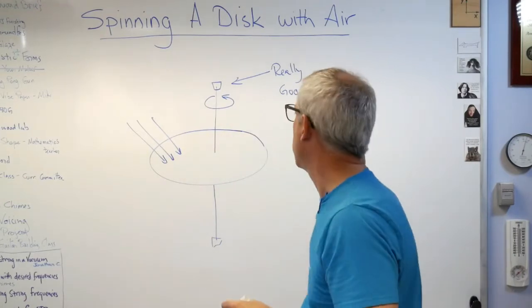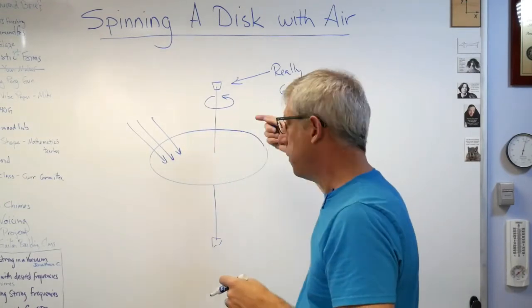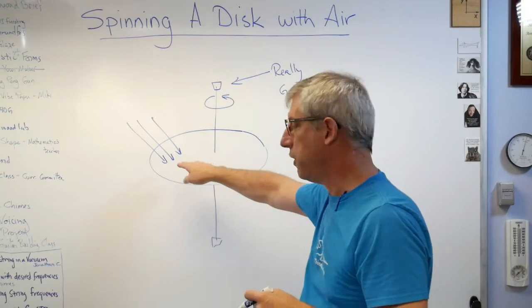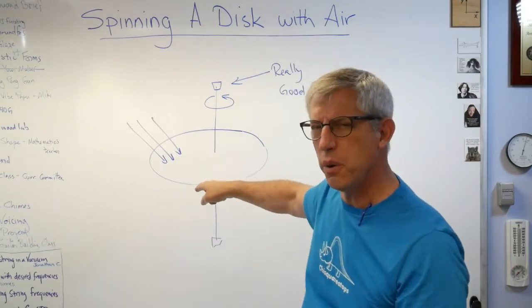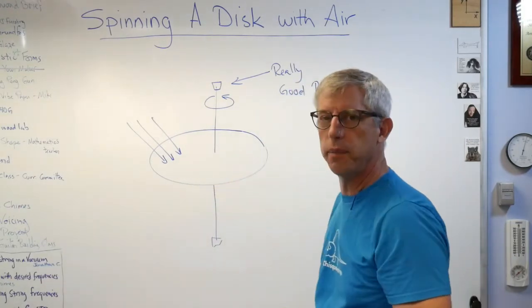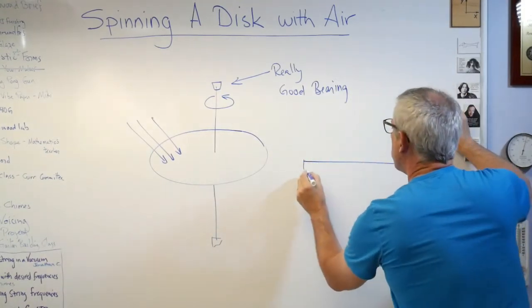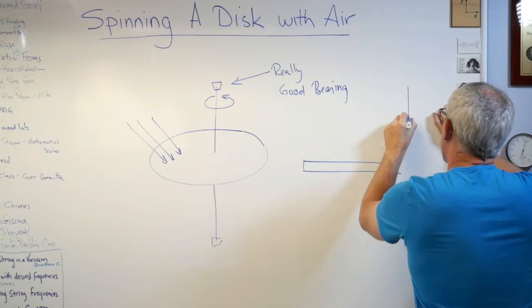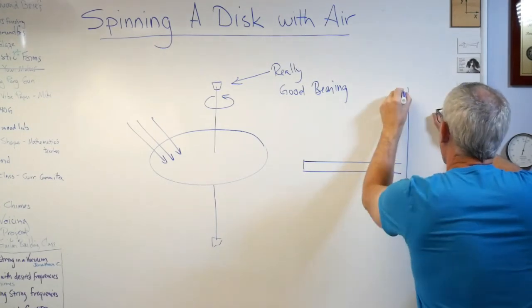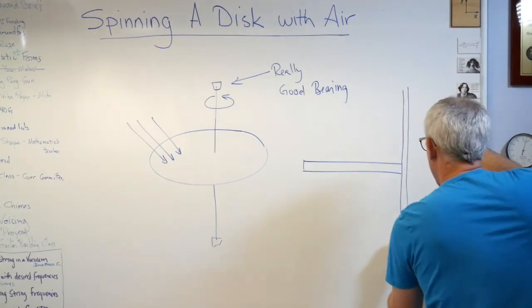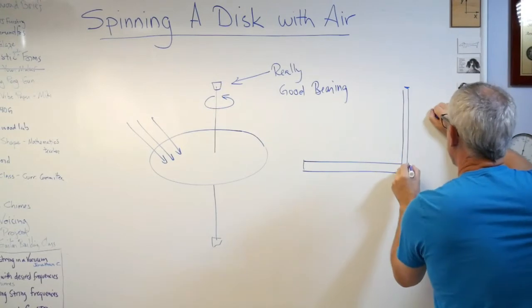There's very, very little resistance to spinning. It can't move any other direction, it can only spin. Well if I were to take air and blow it across here, across the surface, there would be shear forces, right?